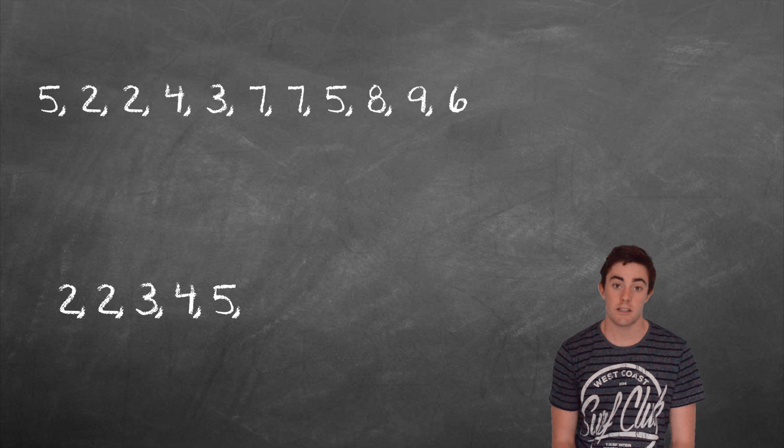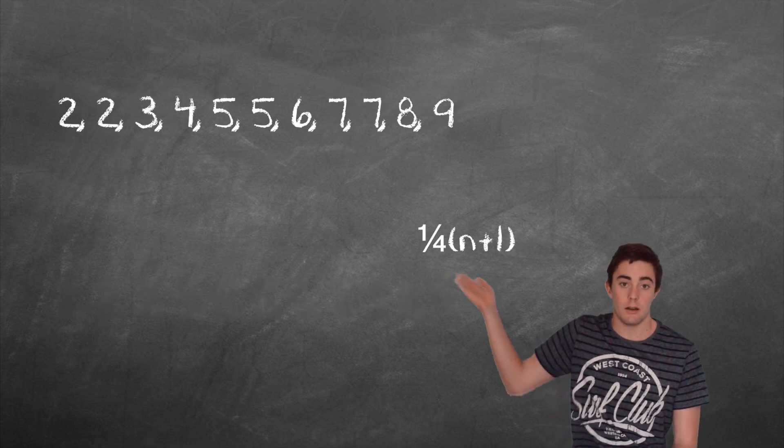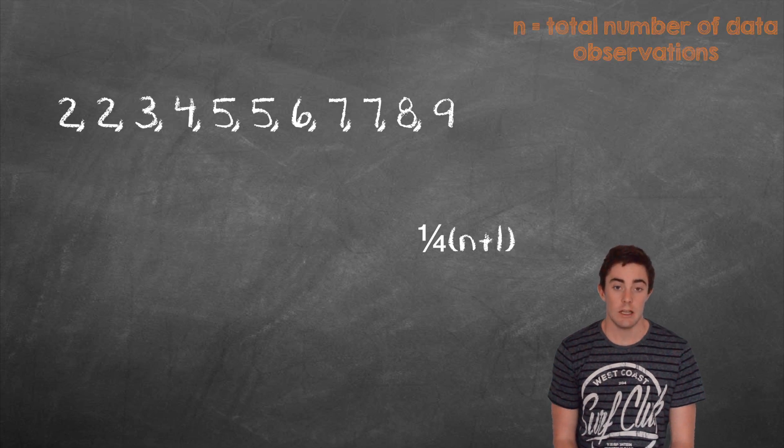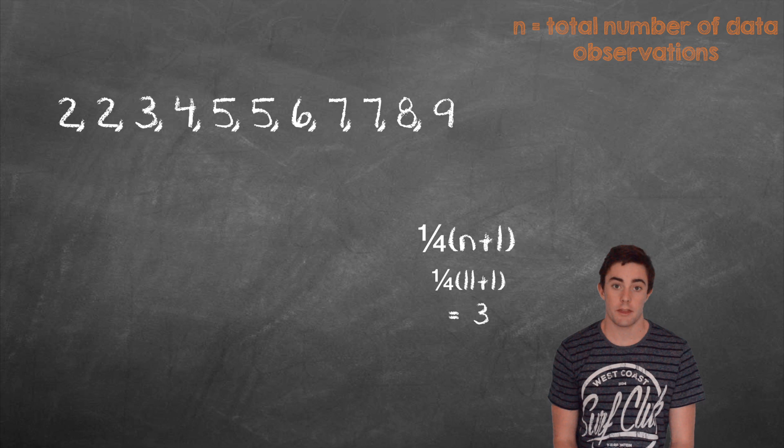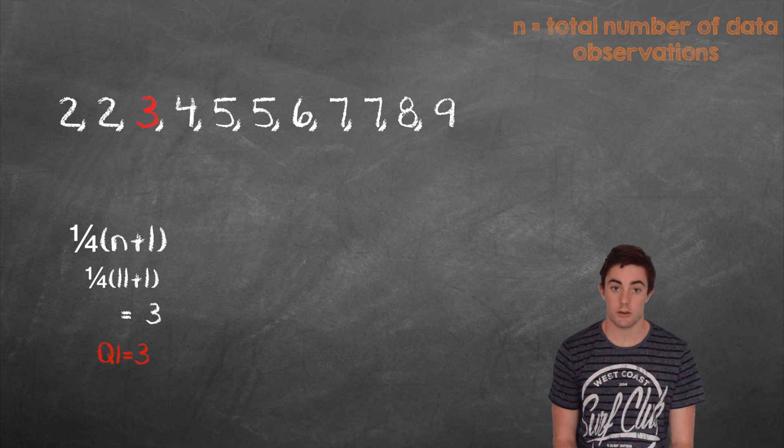First, the data must be arranged in ascending order. To find the first quartile we will use the following formula, with n being equal to the total number of observations made in the data set. If we substitute 11 for n, we get 3. This gives us the position of the quartile and not the value of the quartile. It just so happens that they both equal 3 in this case.